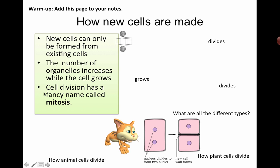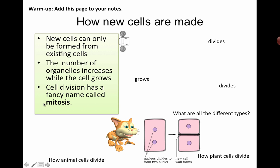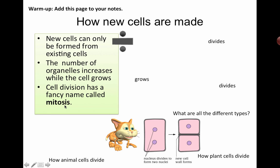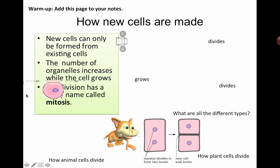Cell division specifically has a fancy name. This is specifically for when the DNA actually divides — it's called mitosis. So if you search online for cell division, you'll often see the word mitosis, which has many stages, but we're not going to go through that right now.